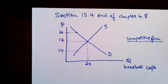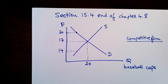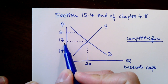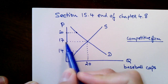Let's review section 15.4, end of chapter 4.8. We have a market for baseball caps. The price of $17 was determined by the interaction of consumers with firms supplying those. In this market, some consumers were willing to pay more than $17 for a baseball cap. Maybe one of them was willing to pay $20 but ended up only paying $17, so this consumer has a surplus of $3.